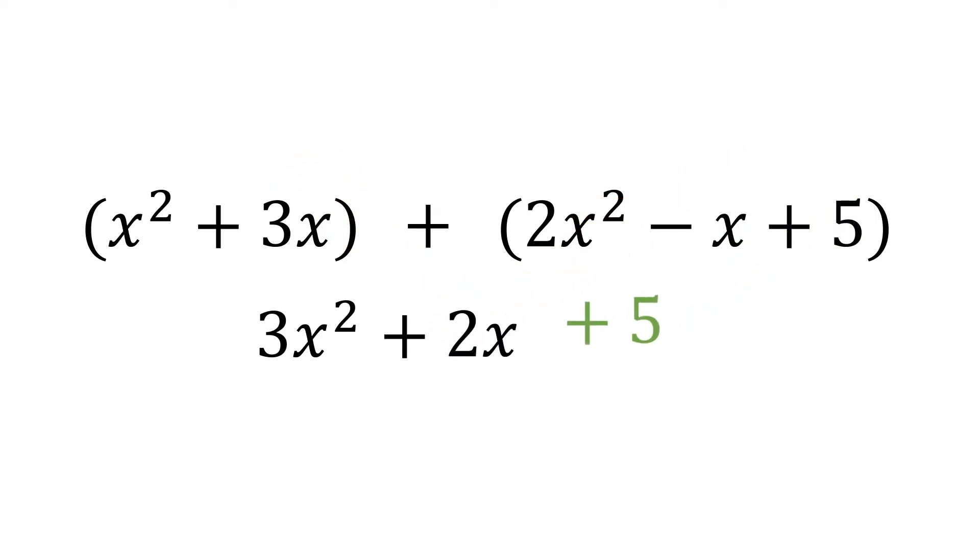And finally, we add the remaining 5. So therefore, the answer is 3x squared plus 2x plus 5.